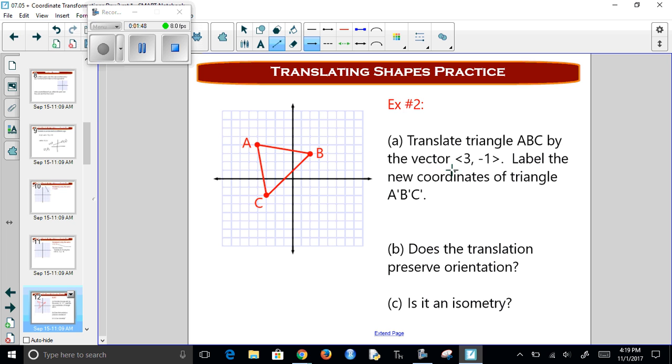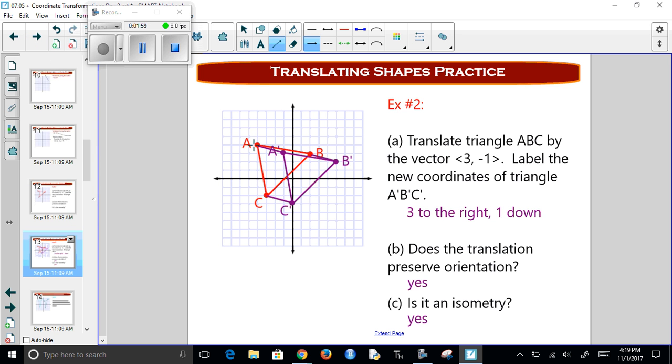So now if I take this and I translate it all by the vector <3, -1>, I'm going to take each point and I'm going to go 3 to the right and 1 down. So the whole thing moves to the right 3 and down 1. Does the orientation stay the same? Yes. Is it still a symmetry? Yes.